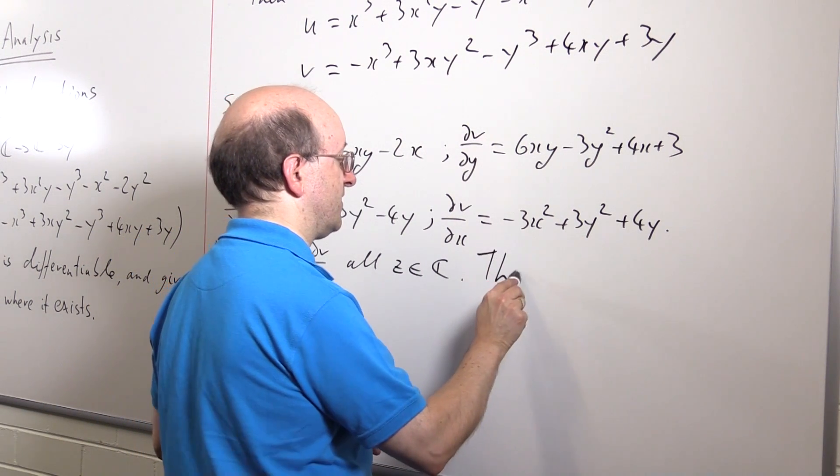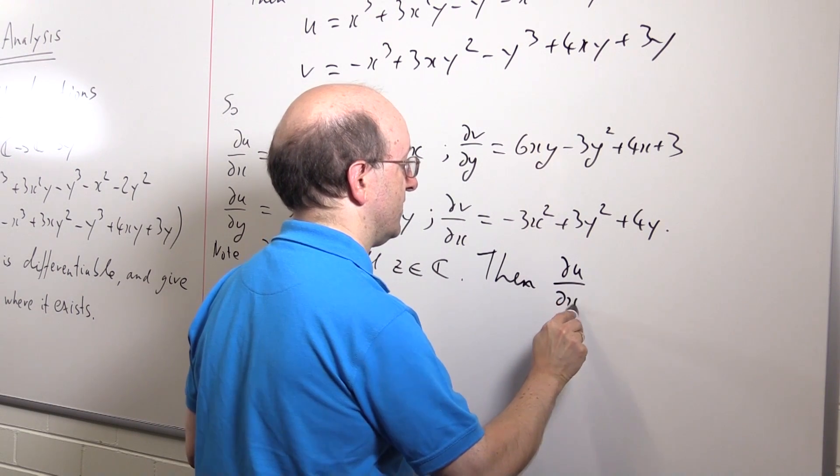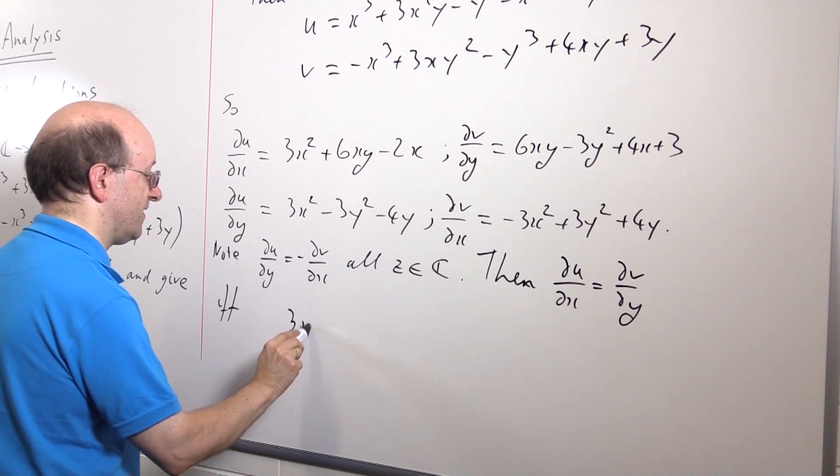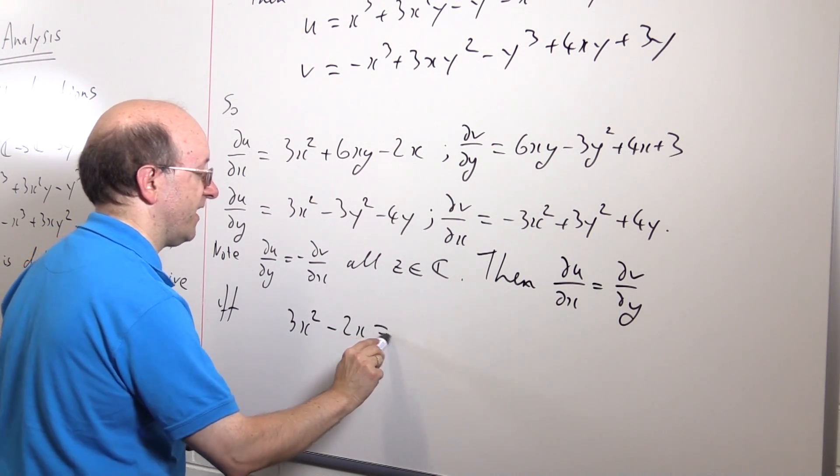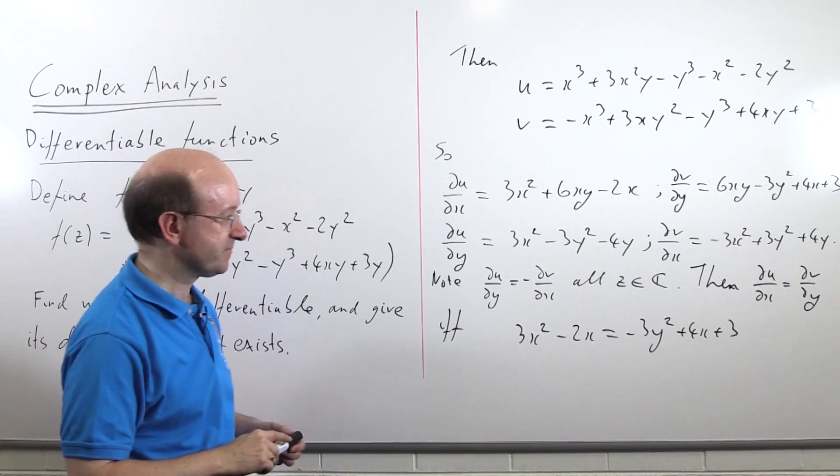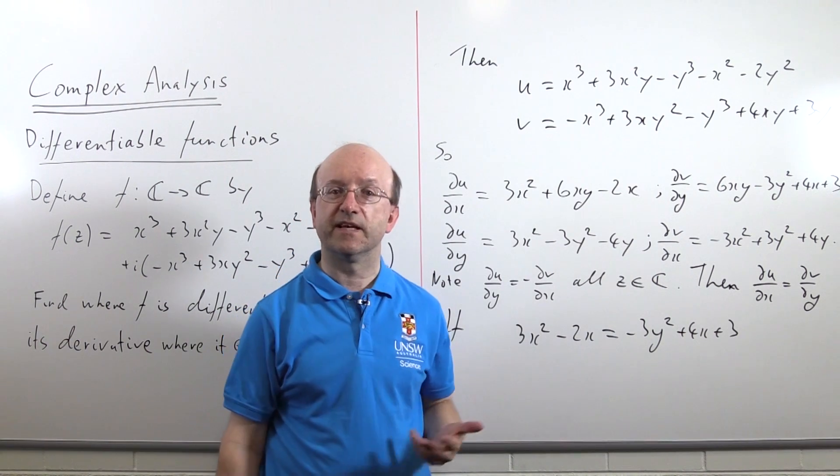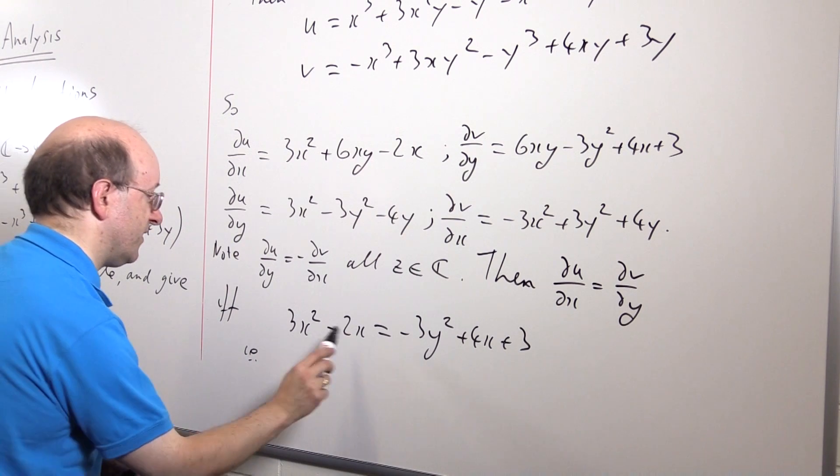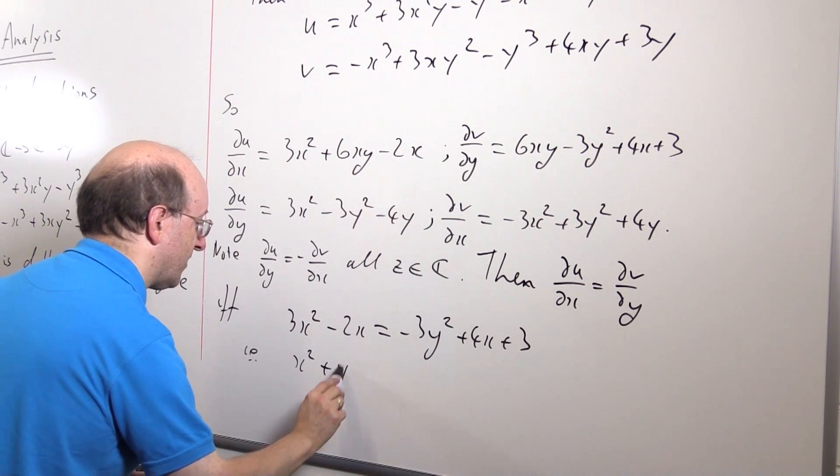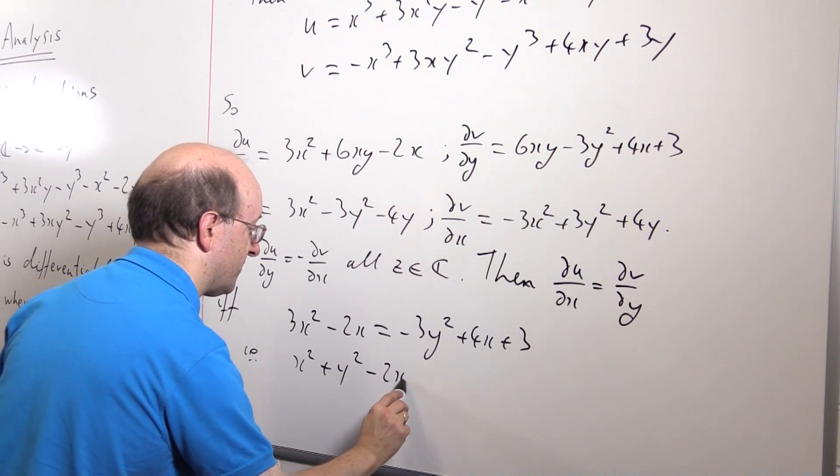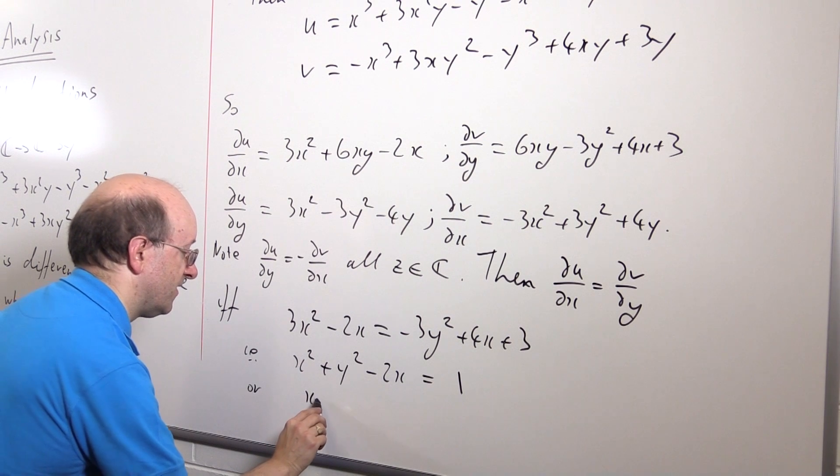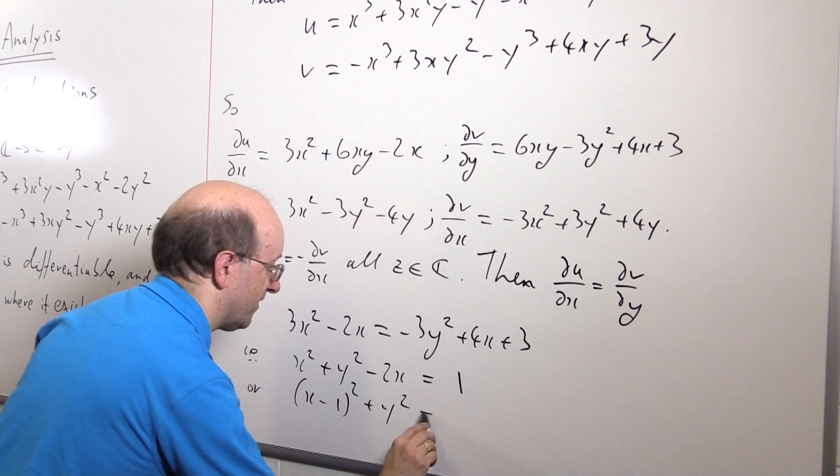So, then du dx is equal to dv dy. Well, it's actually if and only if 3x squared, we can forget the 6xy's cancel off, minus 2x equals minus 3y squared plus 4x plus 3. And if we rearrange that, we'll find that's going to be a circle. So, we move the y squared to the other side and the 4x, and everything in fact divides through by 3. So, we get x squared plus y squared minus 2x equals 1 or x minus 1 all squared plus y squared equals 2.